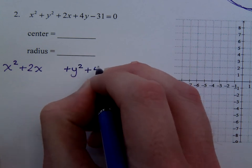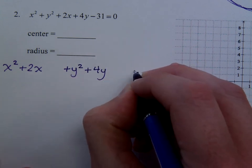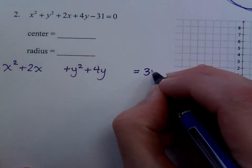Leave a space. Plus y squared plus 4y. Leave a space, and go ahead and kick the 31 to the other side. Like this.